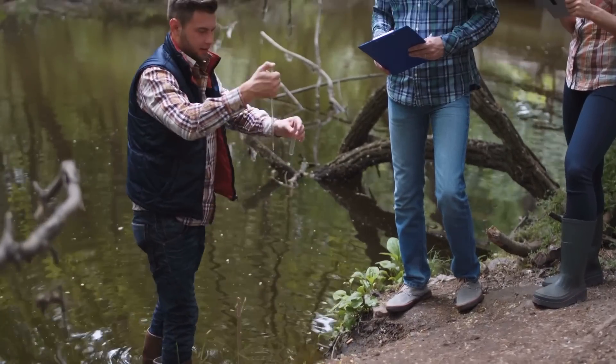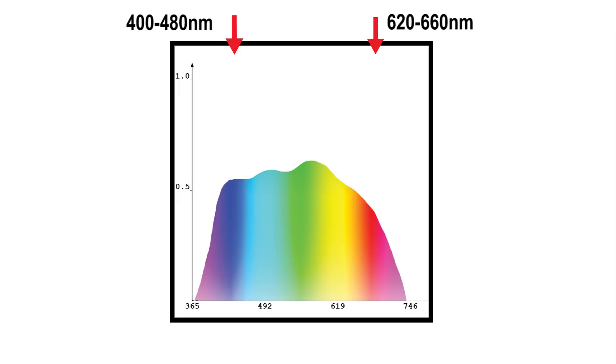Through countless hours of research, science has determined that plants respond optimally to a nanometer range of 400 to 480 and 620 to 660. While many refugium lights on the market have that wavelength, they're not the most efficient for growing Chaeto.